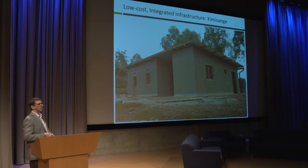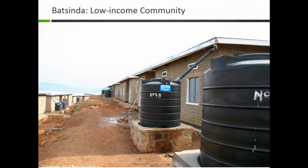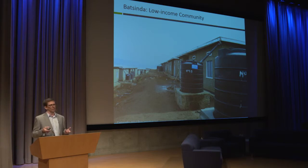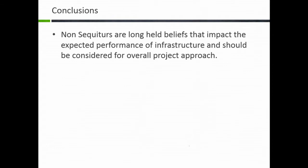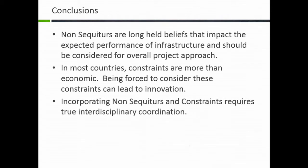In Rwanda, things happen fast — plastic bags were outlawed overnight by President Kagame. The stabilized compressed earth block was determined to be durable three days after the mayor saw it. A year later, they took the exact same design and built Betsinda, which is 480 units. The whole point is that rather than going in as an expert explaining how things are done, if you take a Zen-like approach and understand that things are moving and socially acceptable — even if not logical to you — a lot of innovation can come out of it. In conclusion: non-sequiturs are long-held beliefs that impact the expected performance of infrastructure and should be considered for overall project approach. In most countries, constraints are more than economic, and being forced to consider them can lead to innovation. Incorporating non-sequiturs and constraints requires true interdisciplinary coordination — which is what geodesign is. Thank you.